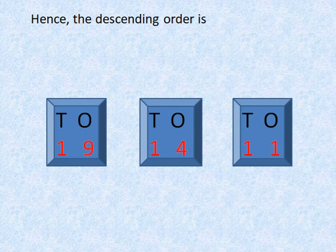Hence, the descending order is 19, 14 and 11.